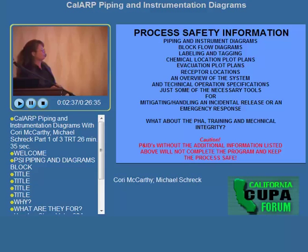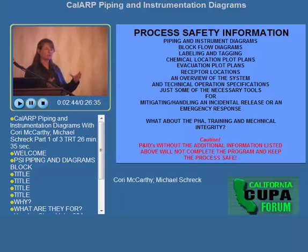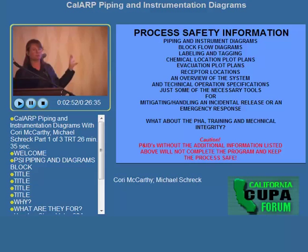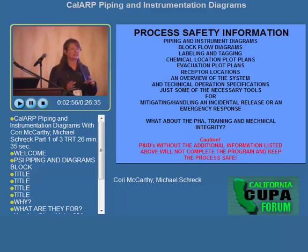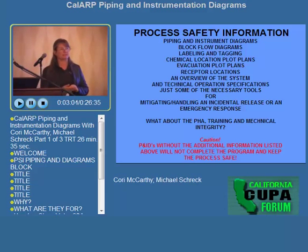What about the PHA, training, and mechanical integrity? Those three elements of CalARP, PSM, or RMP are also affected by all of those items listed. We want to caution you that just having a P&ID, or having a P&ID that's not updated, is not enough alone to mitigate and handle incidents. We have to have all of these other components as well under process safety information.